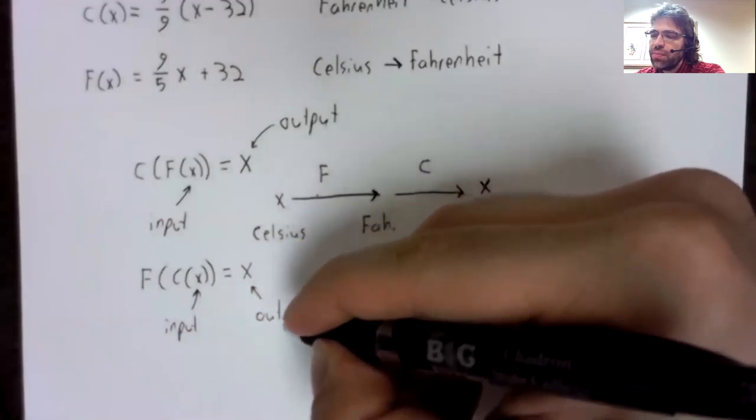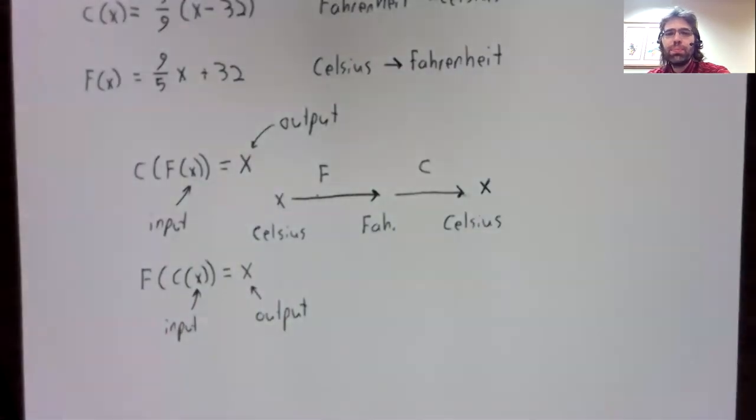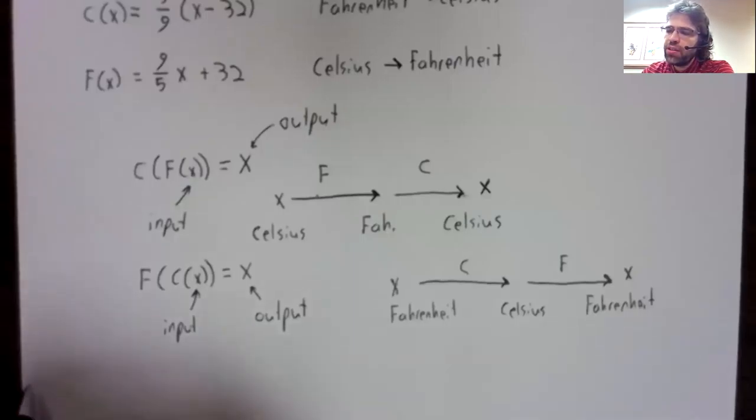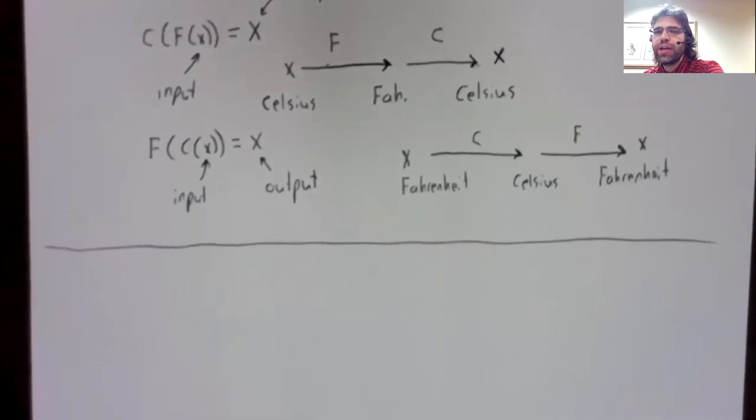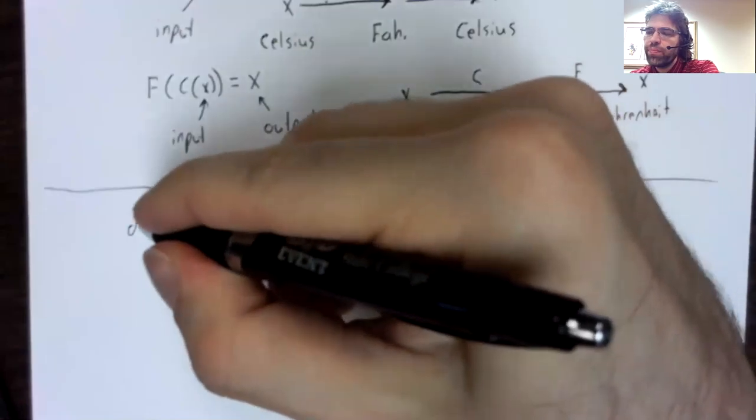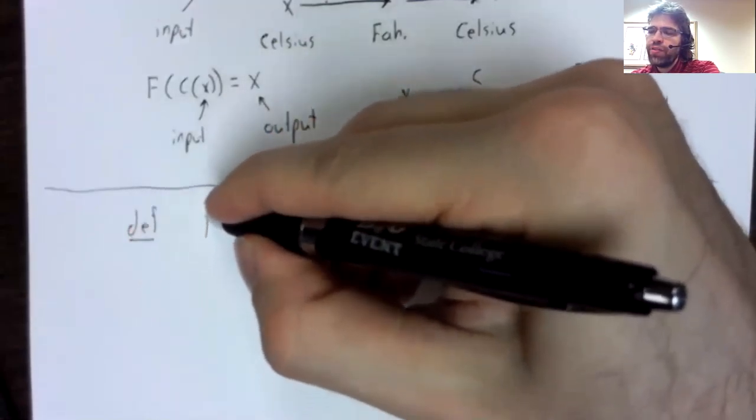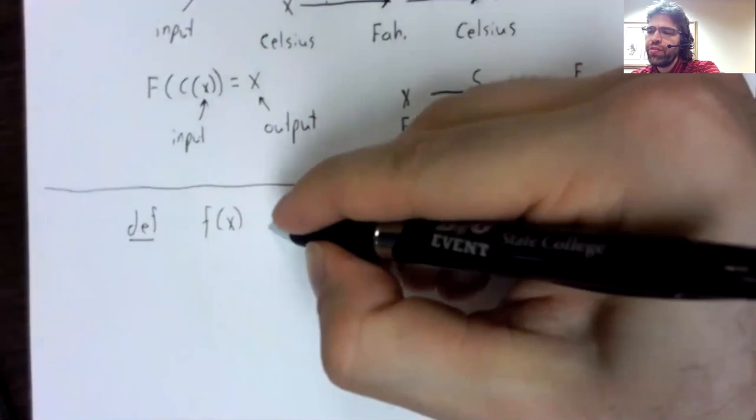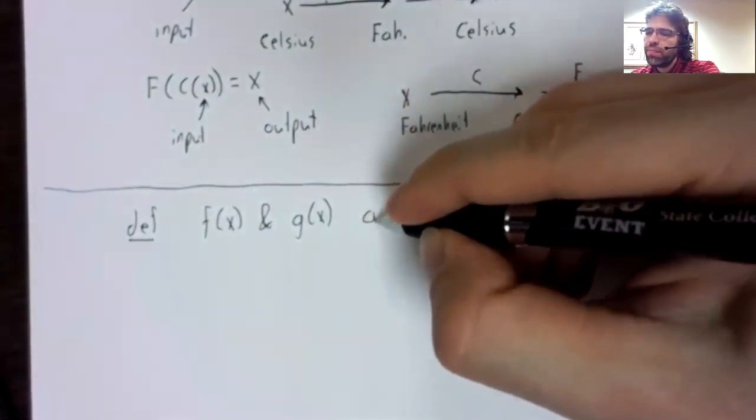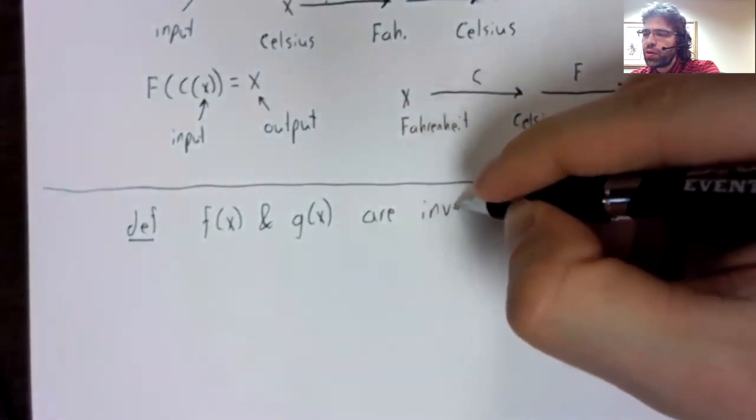Likewise, if we convert from Fahrenheit to Celsius and then from Celsius back to Fahrenheit, that also doesn't do anything. So if we take the composition the other way, once again, we wind up with the input and the output of this composition being the same.